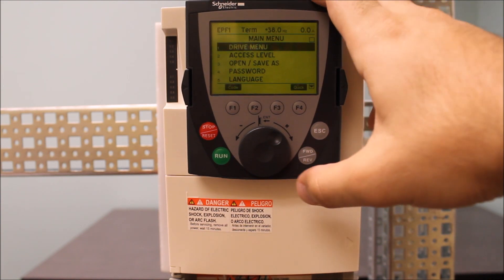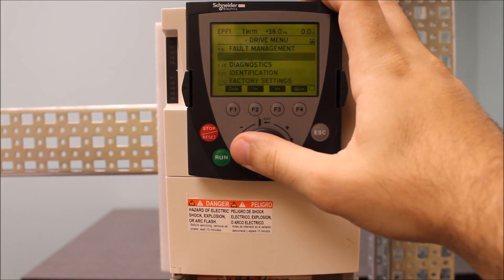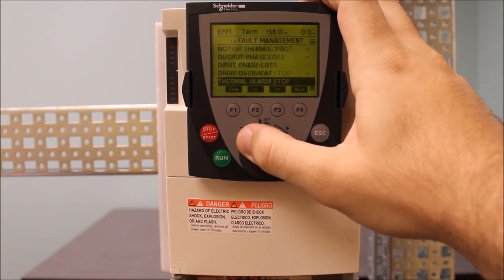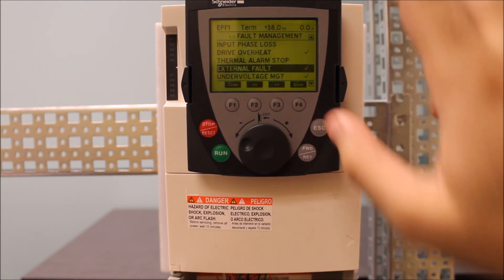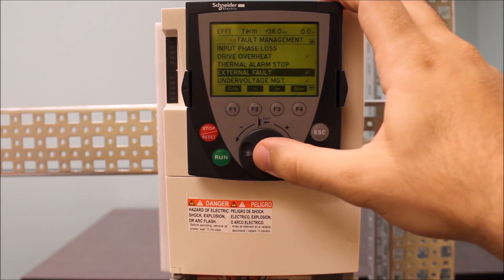So first things first, to confirm this, you want to press enter on drive menu, and then go down to 1.8 fault management, and then scroll down to external fault. You see checkmark right here, that means it's already programmed to something. So we know that it exists.